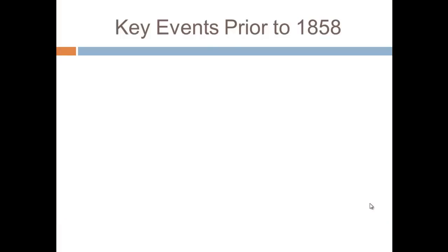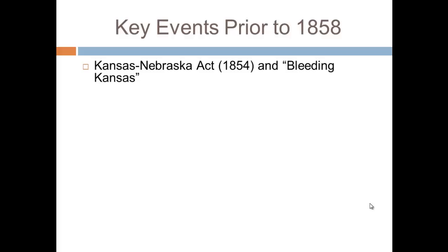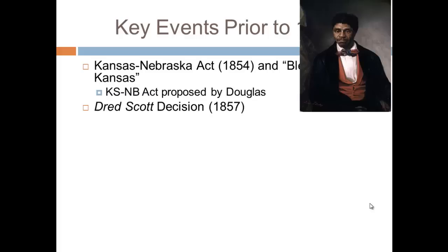Let's talk about some key events prior to 1858. In 1854, we have the Kansas-Nebraska Act, which leads to a series of events known as Bleeding Kansas. I have a video on Bleeding Kansas if you want more information — you can check that out in the description below. The Kansas-Nebraska Act was proposed by Senator Stephen Douglas from Illinois.